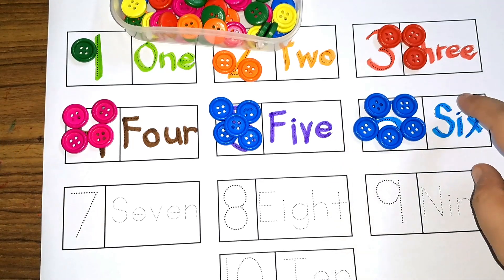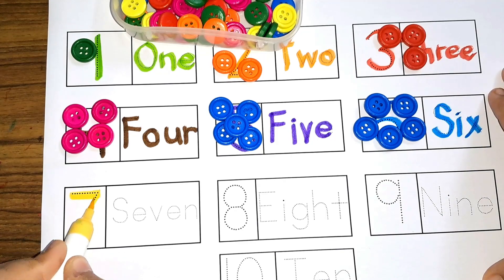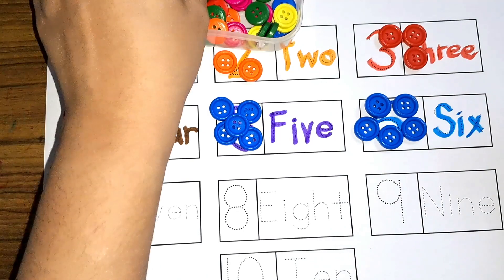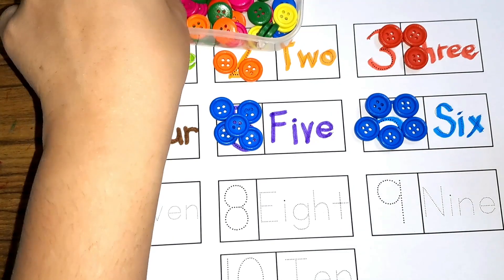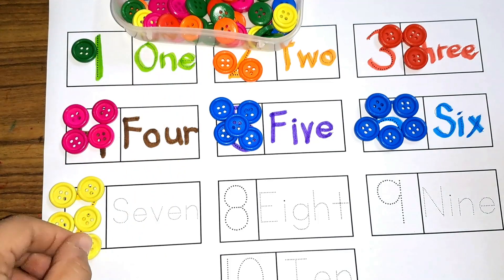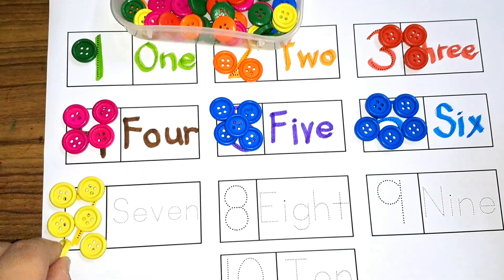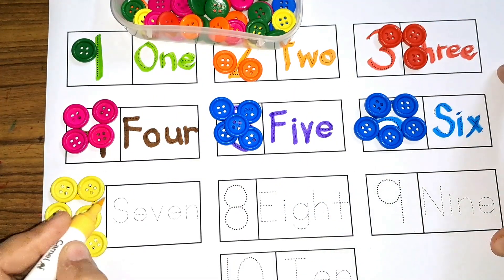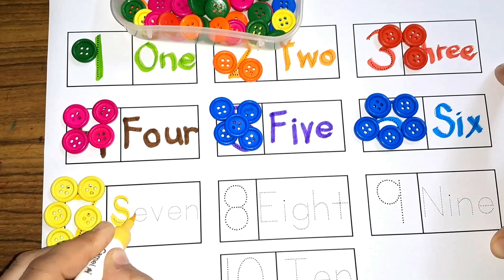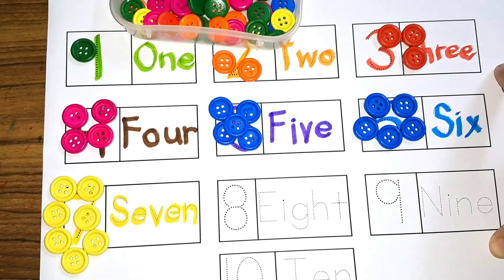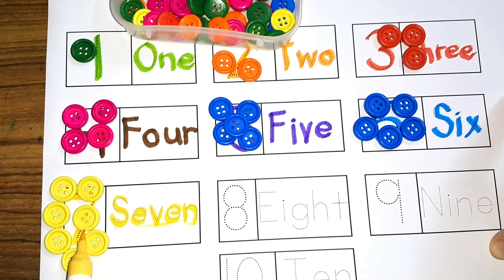Now let's get to the next number. We have seven — number seven. Let's count: six and seven — seven buttons. What is the spelling? S-E-V-E-N. Seven — seven buttons.